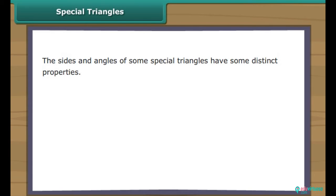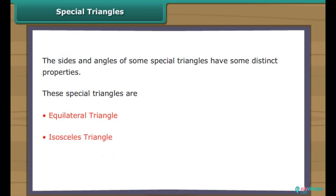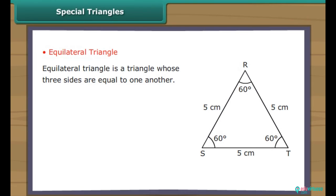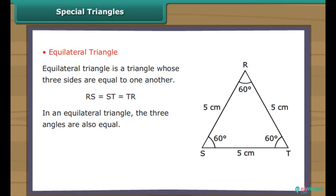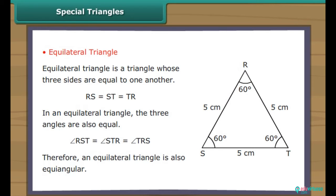Some special triangles have distinct properties: the equilateral triangle, isosceles triangle, and right-angled triangle. An equilateral triangle is a triangle whose three sides are equal to one another. In triangle RST, RS equals ST equals TR. In an equilateral triangle, the three angles are also equal: angle RST equals angle STR equals angle TRS. Therefore, an equilateral triangle is also equiangular.